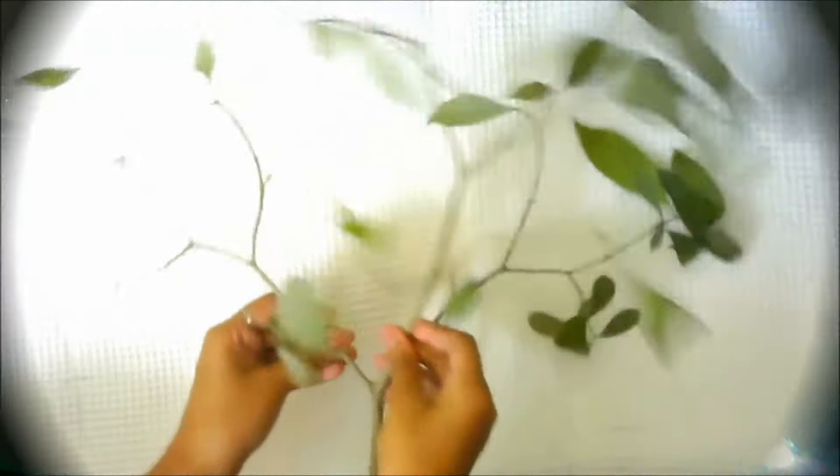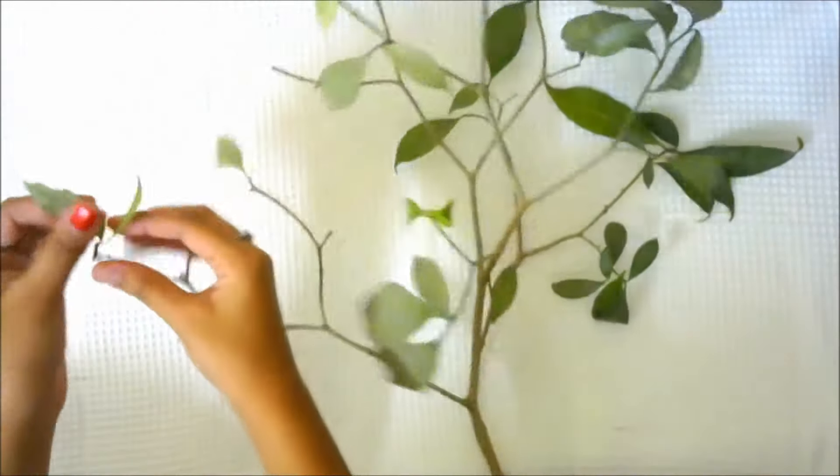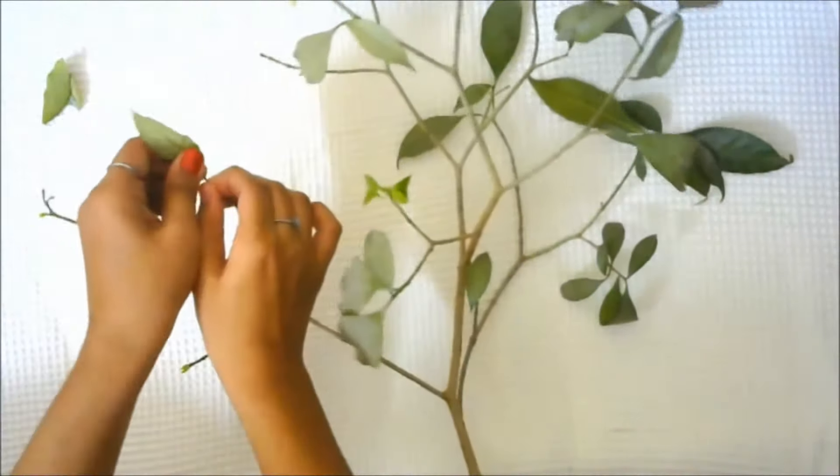What all we need for this project is a dried branch of tree. If you do not have a dry branch available, you can just take a normal branch and remove all the leaves as I'm doing in the video.